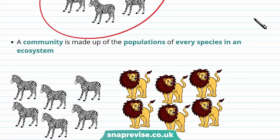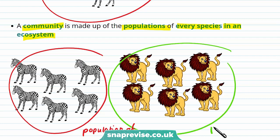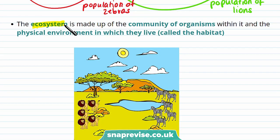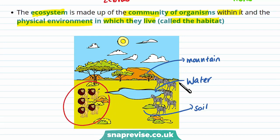The next level of organisation is a community. A community is made up of the populations of every species in an ecosystem. So the population of zebras and the population of lions add together to make a community. The final and biggest level of organisation is the ecosystem itself, made up of the community of organisms within it as well as the physical environment in which they live — this is called the habitat. In this case, the habitat would include the water, the soil, and the mountains, among many other things.